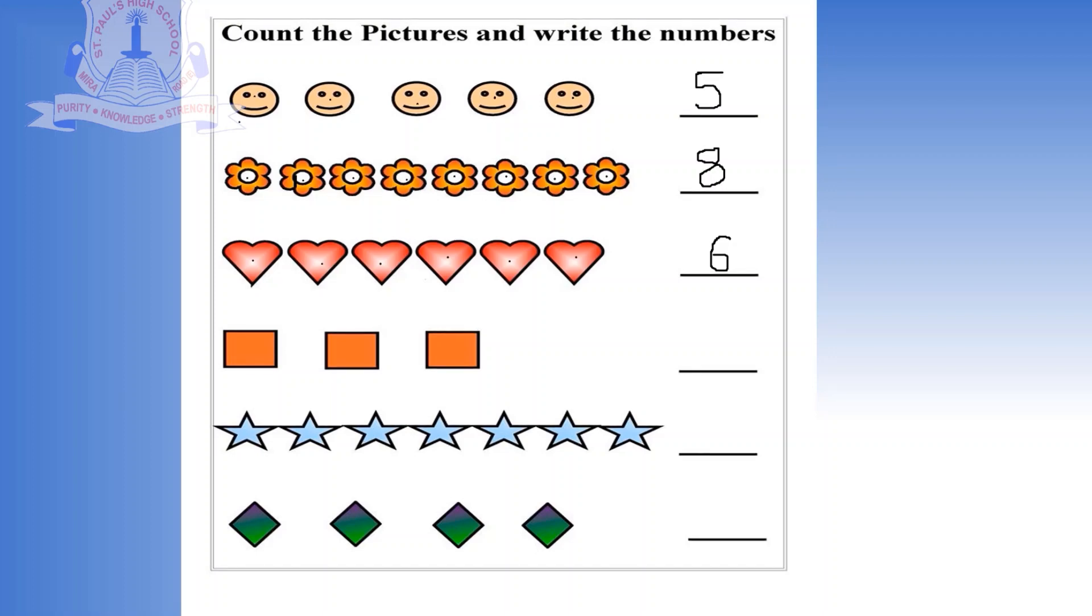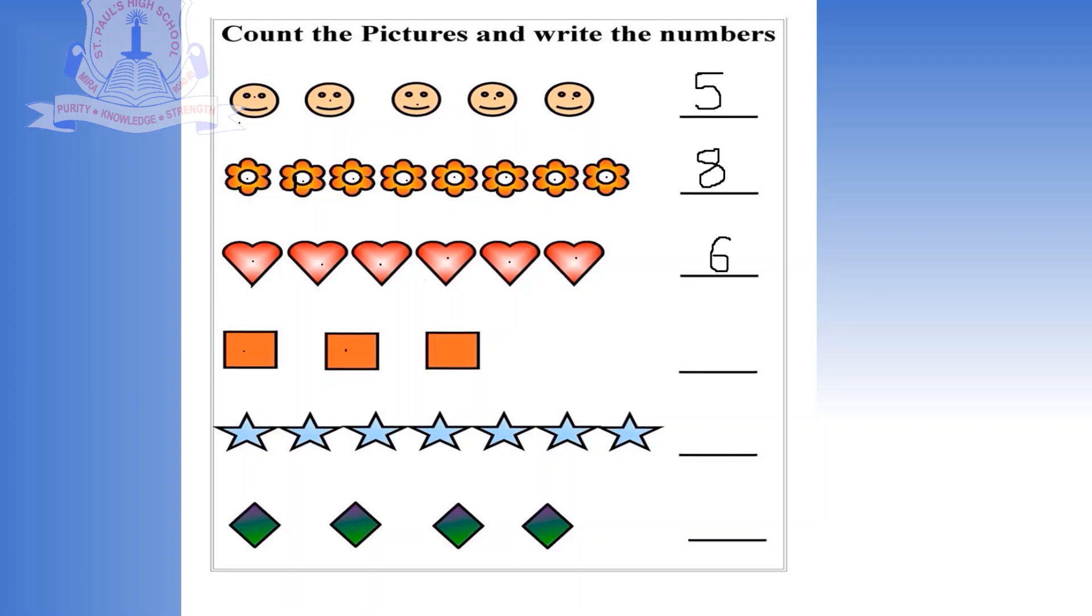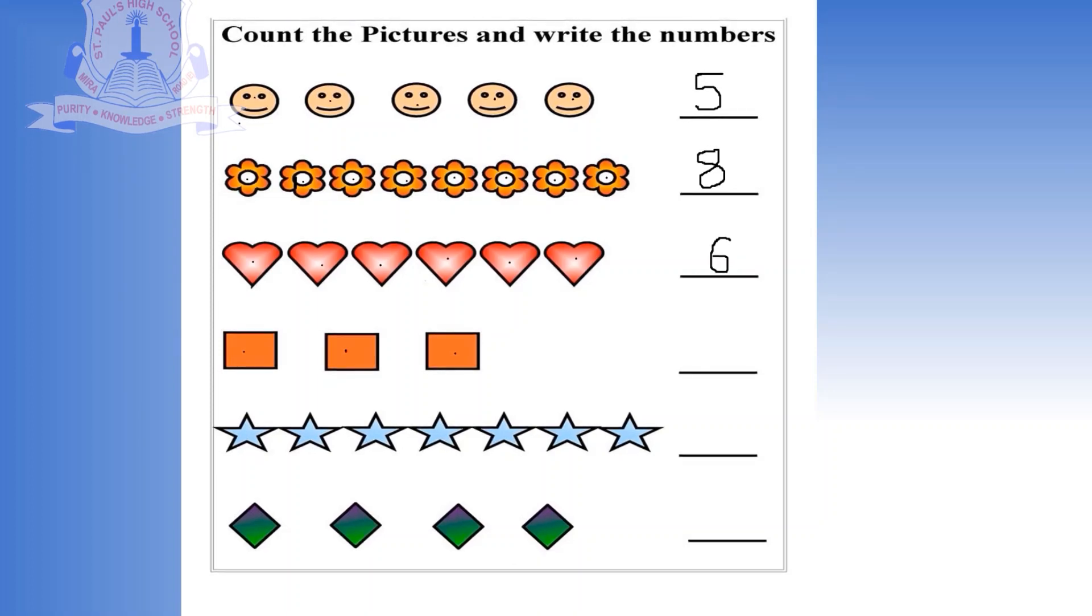Next object is square. 1, 2, 3. So how many squares are here? 3.